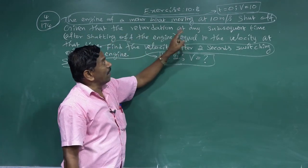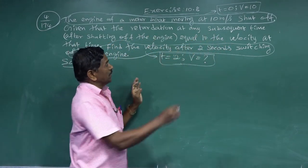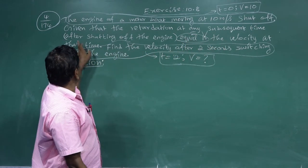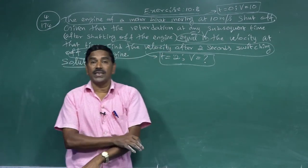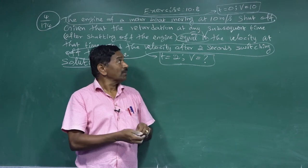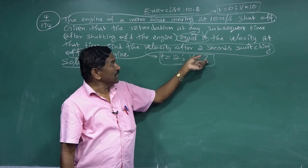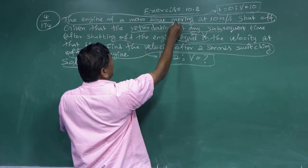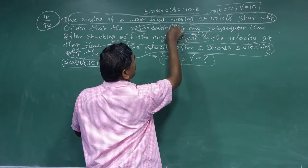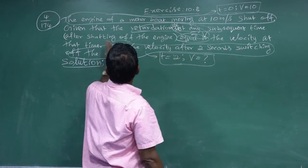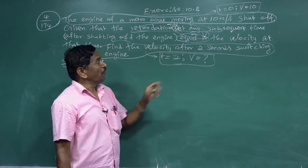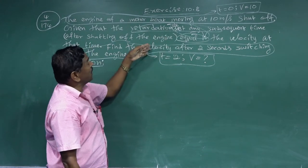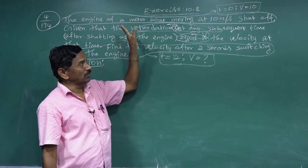Given that the retardation equals the velocity, the velocity v is given by dv/dt. Since retardation means negative acceleration, we write: minus dv/dt is equal to v, which means dv/dt is equal to minus v. Here dv/dt is the acceleration, and after shutting off the engine the acceleration is negative.